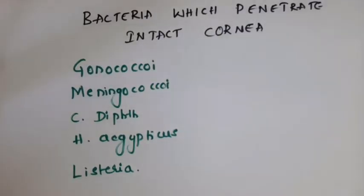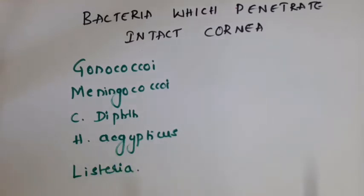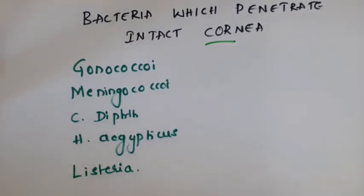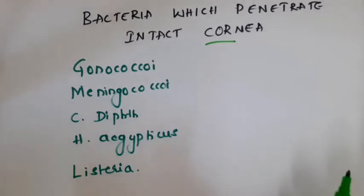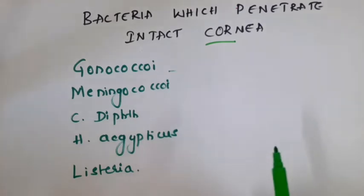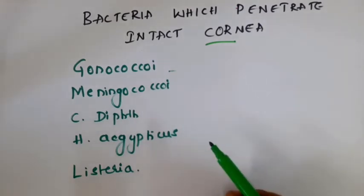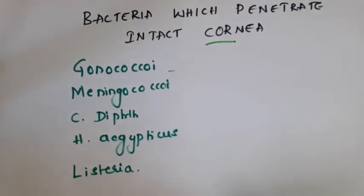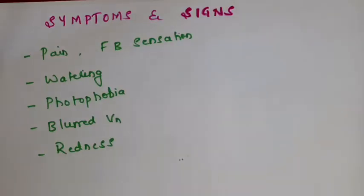This is actually a part of the previous video - bacteria which can penetrate the intact cornea. As I had already discussed, epithelial breach and invasion by bacteria are both important to lead to corneal ulcer. But there are few bacteria which can invade the intact corneal epithelium and still lead to corneal ulcer. The examples are gonococci, meningococci, Corynebacterium diphtheriae, Haemophilus aegypticus, and Listeria. This is one of the commonly asked viva questions.